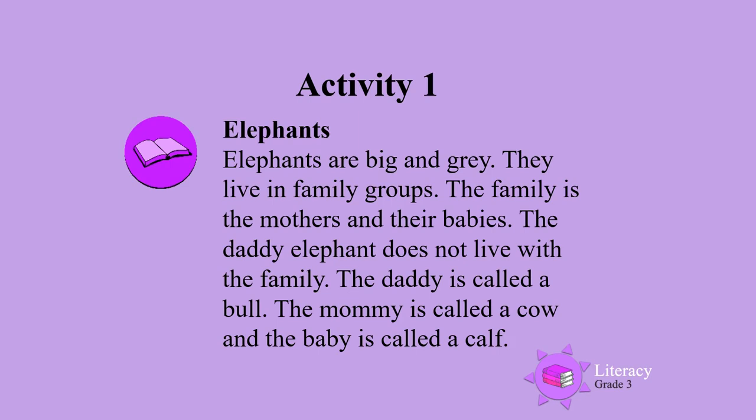Elephants. Elephants are big and gray. They live in family groups. The family is the mothers and their babies. The daddy elephant does not live with the family. The daddy is called a bull, the mommy is called a cow, and the baby is called a calf.